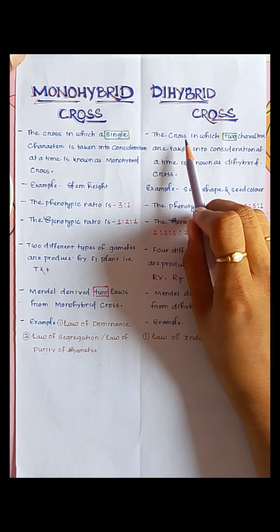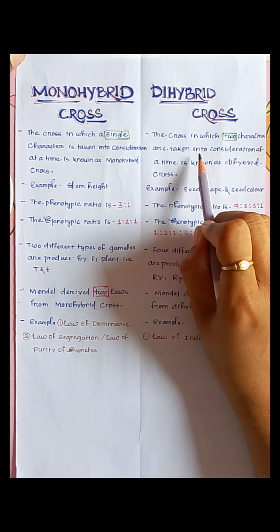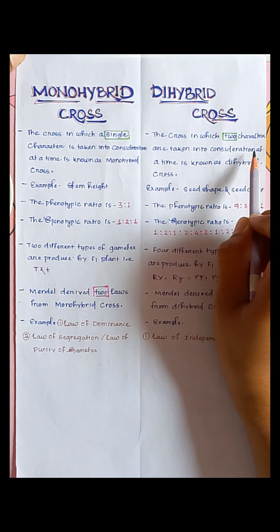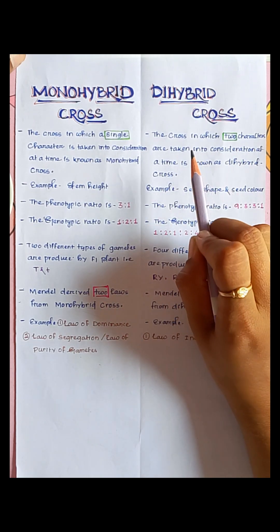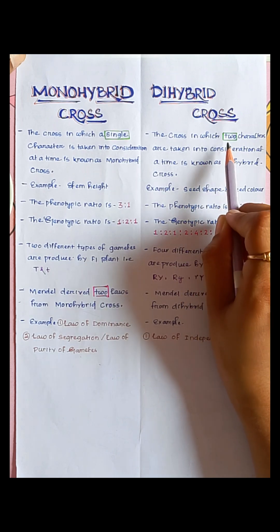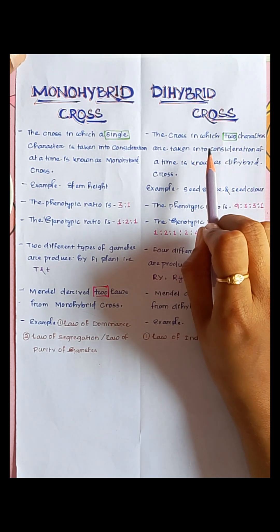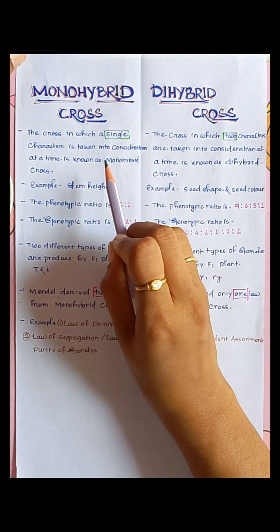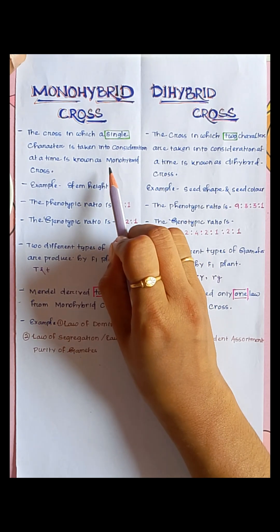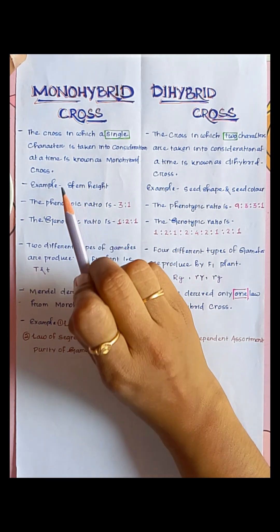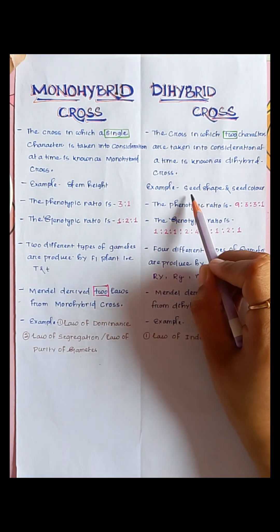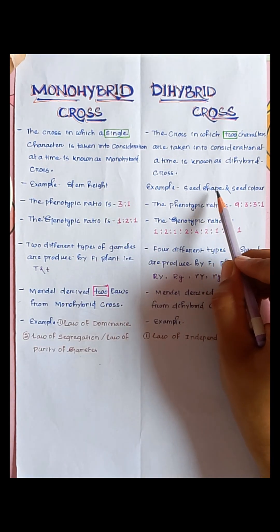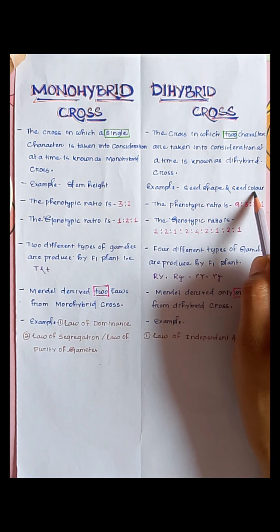The cross in which two characters are taken into consideration at a time is known as dihybrid cross. An example of monohybrid cross is stem height, while examples of dihybrid cross are seed shape and seed color.